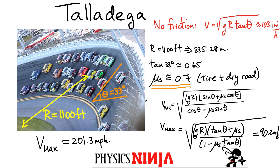That is much faster than the case without any friction — almost twice as big. Looking at the actual record at Talladega, Rusty Wallace set the record in 2004 at 216.3 miles per hour, which is actually pretty close to what we calculated. Different factors can come into play — if the angle is slightly bigger or the coefficient of friction is slightly larger, we could see how the coefficient would have to change in order to match that record speed.